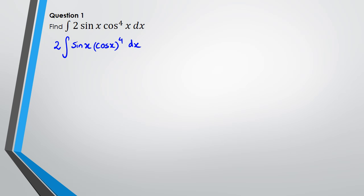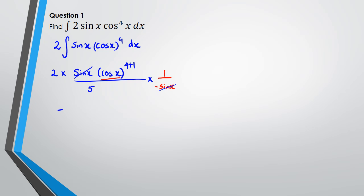Now with the reverse chain rule, what you can do is write 2 multiplied by sine x, and then cos x to the power of 4 plus 1, divided by the new power which is 5, and also multiplied by 1 over the differentiation of cos x. The differentiation of cos x is negative sine x. Simplifying this, sine x and sine x cancel out, the negative 1 comes to the numerator, and what we're left with is negative 2 over 5 · cos⁵x + c.